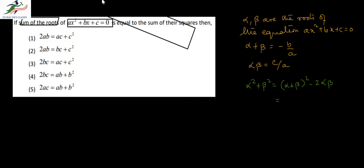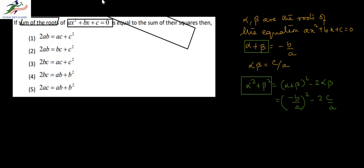Substituting, alpha² + beta² = (-b/a)² - 2(c/a). Since alpha² + beta² equals alpha + beta, we set this equal to -b/a. So we have -b/a = b²/a² - 2c/a.